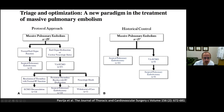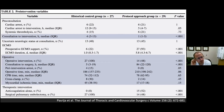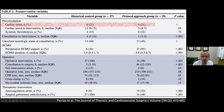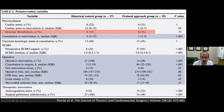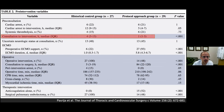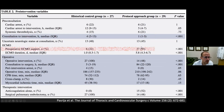Of those 27 supported with ECMO, 14 had resolution of thrombus with normal RV function and were decannulated without requiring surgery. 12 had persistent thrombus burden and RV dysfunction and went on to surgical embolectomy; 1 was withdrawn due to CNS injury. Outcomes were impressive — 20 percent in both arms had prior cardiac arrest. In the protocolized approach, mean time from consultation to intervention was only one hour.